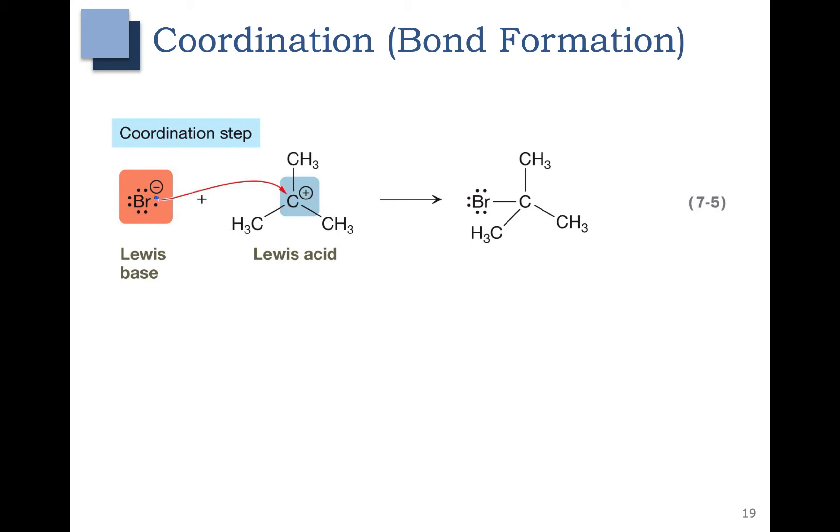I'm going to show the lone pair on the bromine in blue and it is forming the bromine carbon bond in blue. This blue lone pair here becomes a bromine carbon bond and we're just going from electron rich to electron poor.